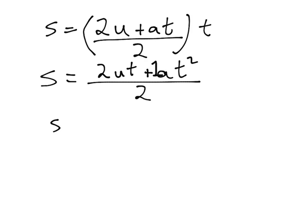We are now going to finally divide the 2 into the numbers and letters that are up on the top. The first thing we can do is that the 2 on the bottom of our fraction will cancel with the 2 that's in front of the ut, so that'll give us just ut.